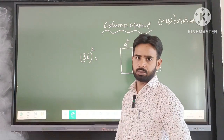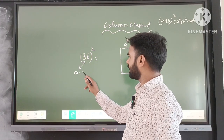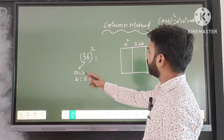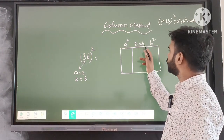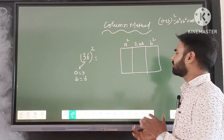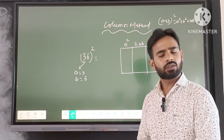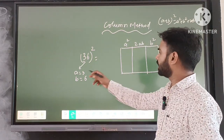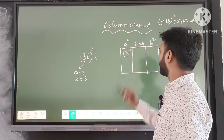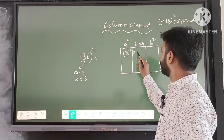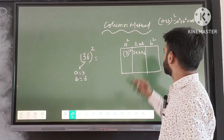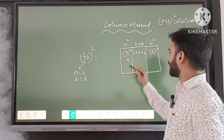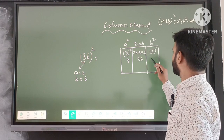So which one is a and which one is b? Here we will consider 3 as a and 6 as b. We find the square of a, which is 3² = 9. Then we find 2ab, which is 2 × 3 × 6 = 36. Then b² = 6² = 36. So in our three columns we write 9, 36, and 36 respectively.